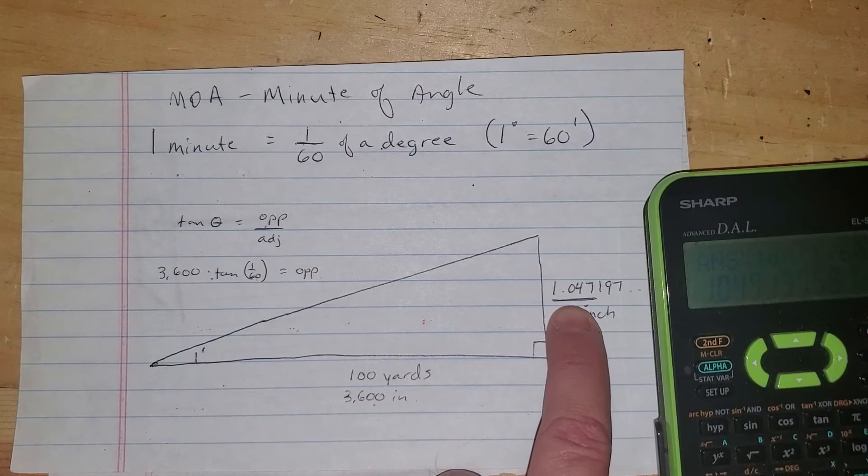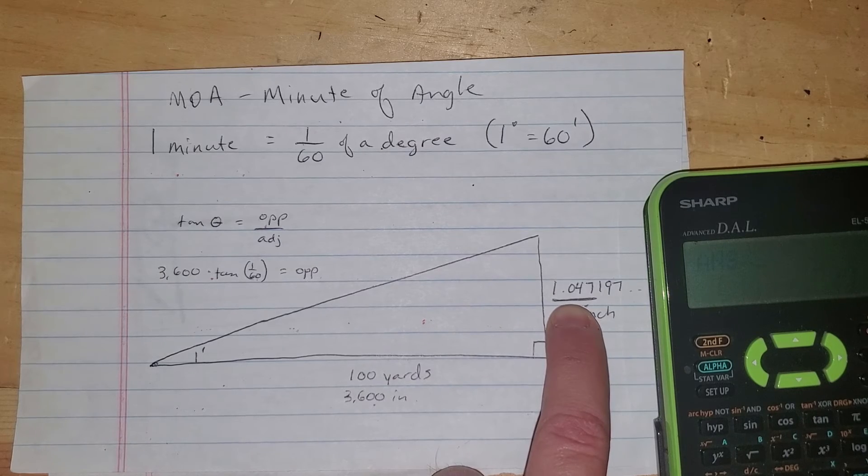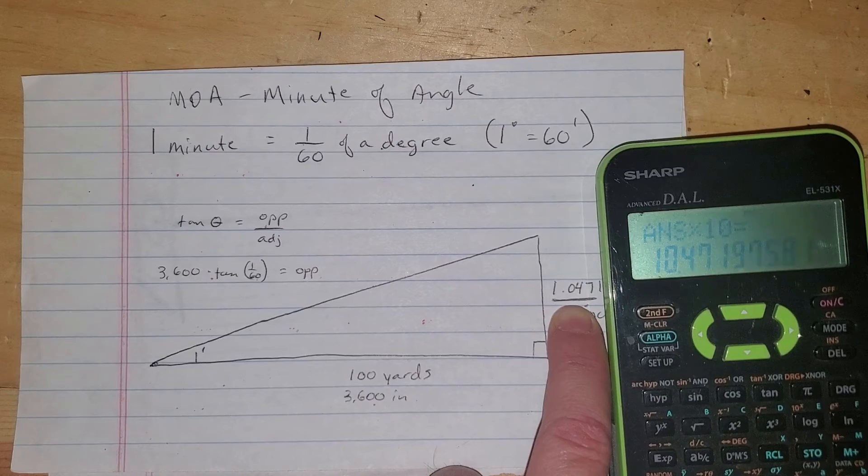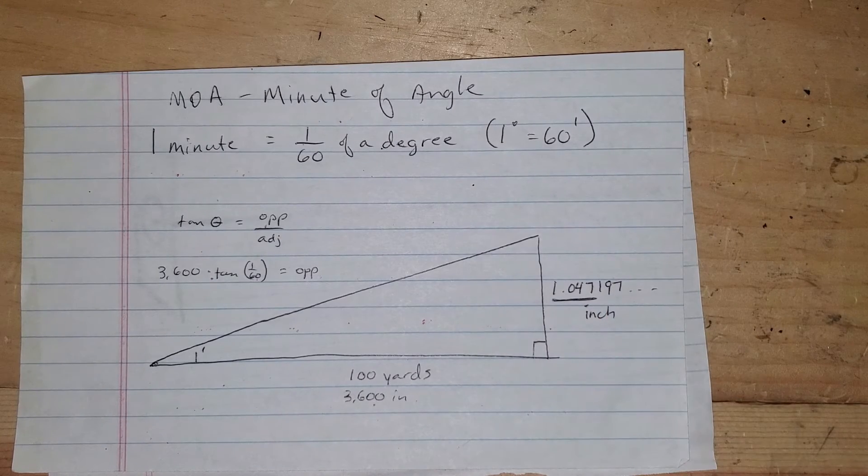That little bit of decimal starts to matter. So if I take this at 1,000 yards, that'd be times 10, right? You're getting it 10 and a half inches, not 10 inches.